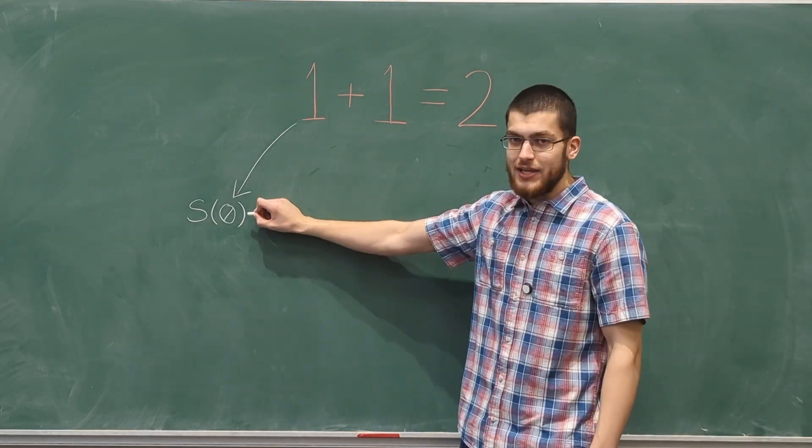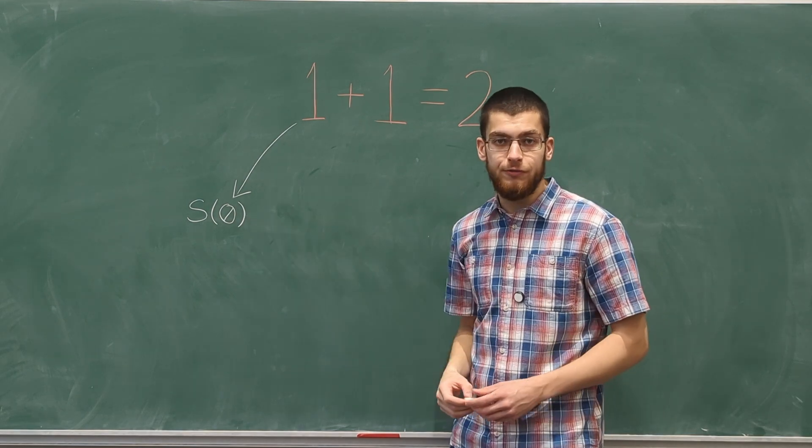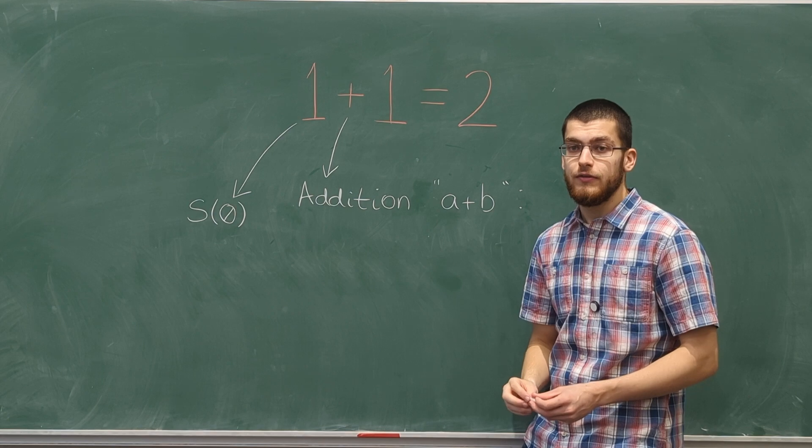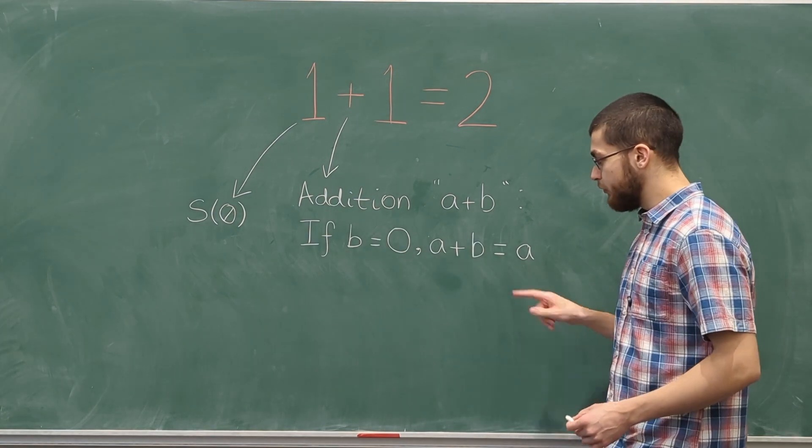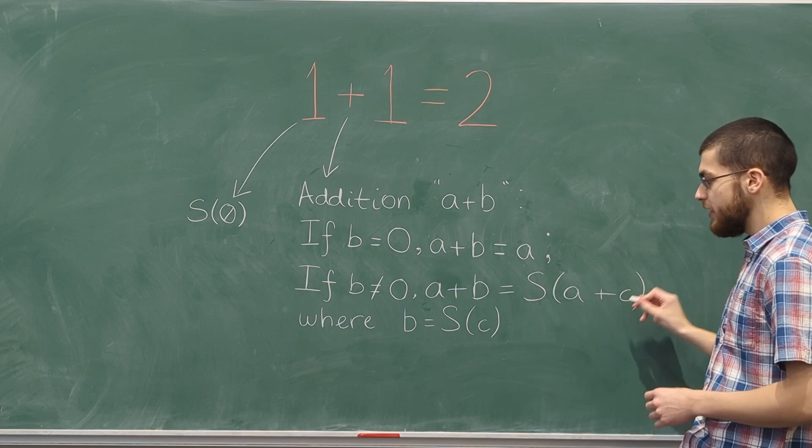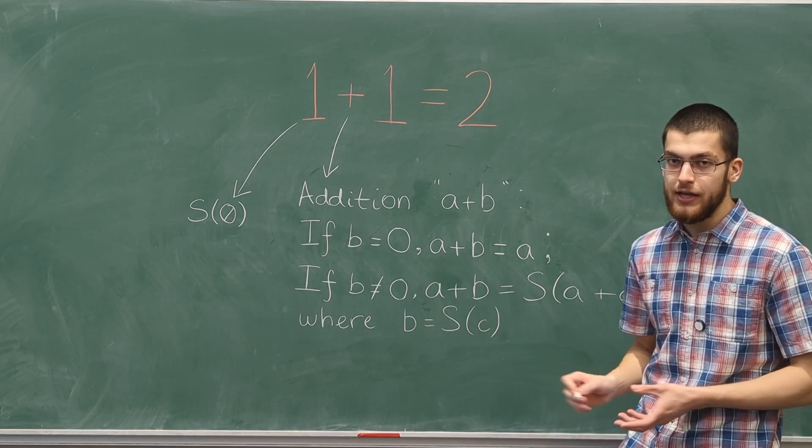Well, one is just the successor of zero, and we know zero is a number from Peano's first axiom. We define addition as a plus b, which has two properties. If b is zero, then a plus b is a. And when b is not zero, a plus b is the successor of a plus c, where b is the successor of c.